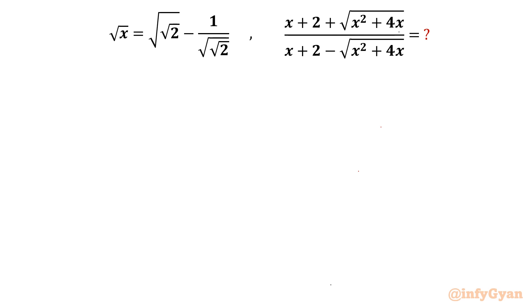Hello everyone, welcome to InfiGaun. In this very exciting video of algebraic challenging equations and expressions, we are going to solve two math olympiad problems today. The first one is: square root of x equals square root of (square root 2 minus 1) over square root of square root 2. We have to find the value or simplify the expression (x + 2 + √(x² + 4x)) / (x + 2 − √(x² + 4x)). So let's get started.